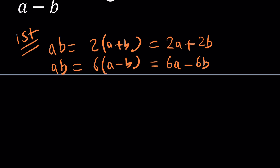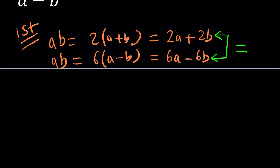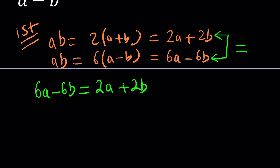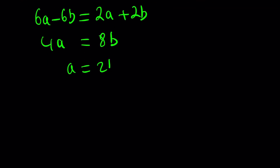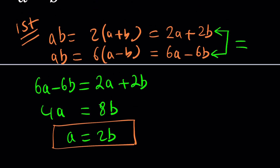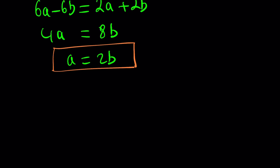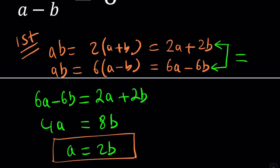Now, since both of these equal ab — in other words, if two things are equal to the same thing, then they are equal — we can say that 6a minus 6b is the same as 2a plus 2b. That basically gives us a ratio of a to b. If you put the a's on the same side, you're going to get 4a, and adding 6b gives you 8b. This can be simplified and written as a equals 2b.